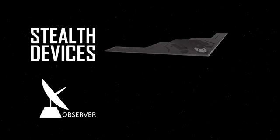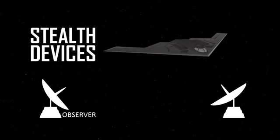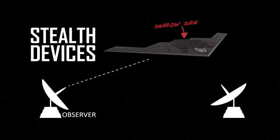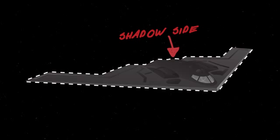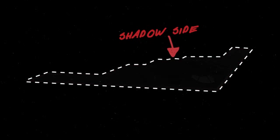However, stealth may be tricked by moving the observer or by detecting the shadow of the object. Cloaking works by placing something around the object that cancels the wave for all observers, even on the shadow side.